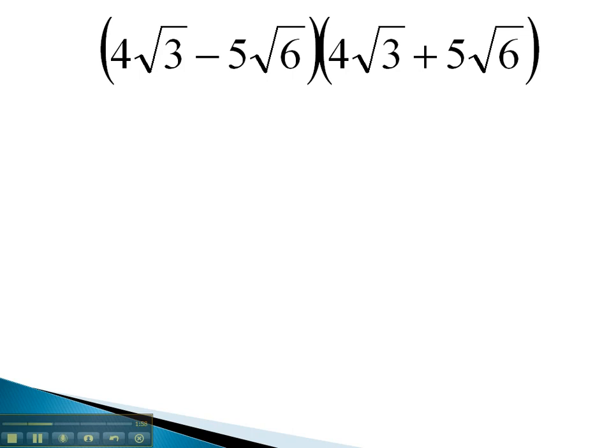Notice again, we have the same terms in both binomials. The only difference is one has a subtraction and one has an addition in the middle of the binomial. Again, in this case of a sum and a difference, we only have to multiply the first two terms.